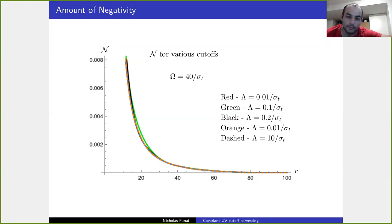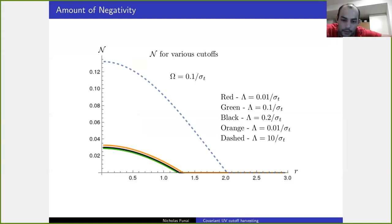This will be telling us how much entanglement harvesting we can actually do for various UV cutoffs. This is for omega is equal to 40 divided by sigma T, so extremely large energy gap compared to the switching function time. Basically what you can see is that there's virtually no change. These lines are very, very close to one another. However, if we change it to an energy gap which is small, suddenly we see a major difference. The dashed line corresponds to a no UV cutoff, and as we decrease the UV cutoff, you see that the effect is that the negativity decreases significantly.